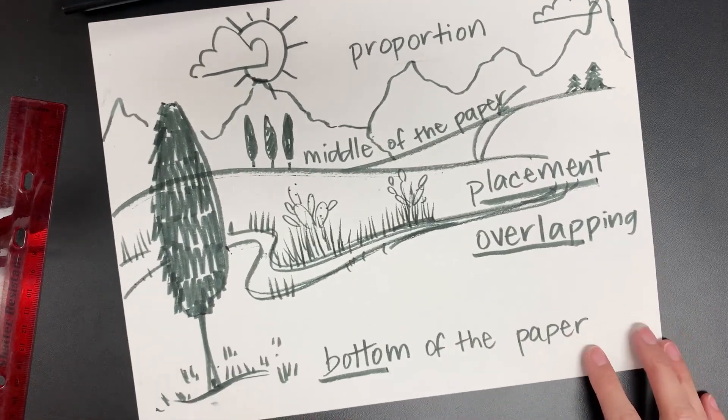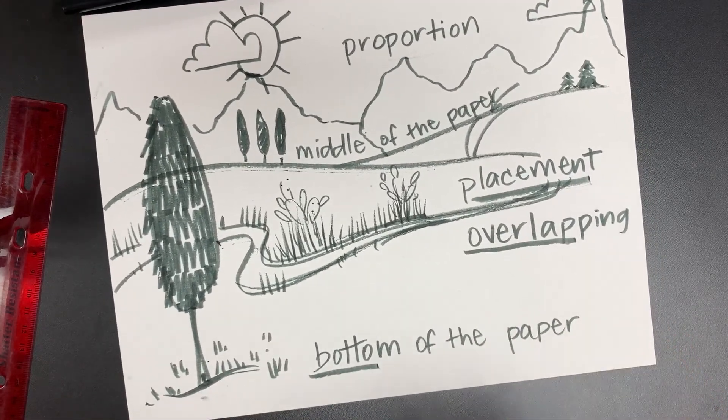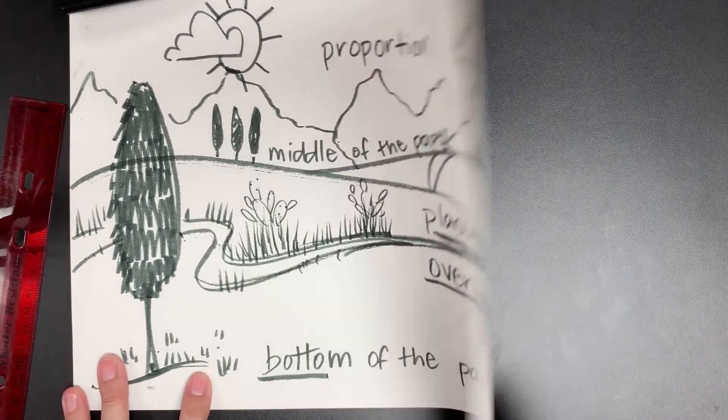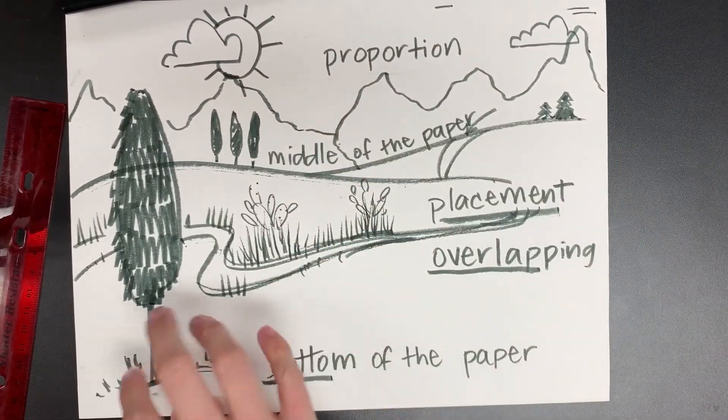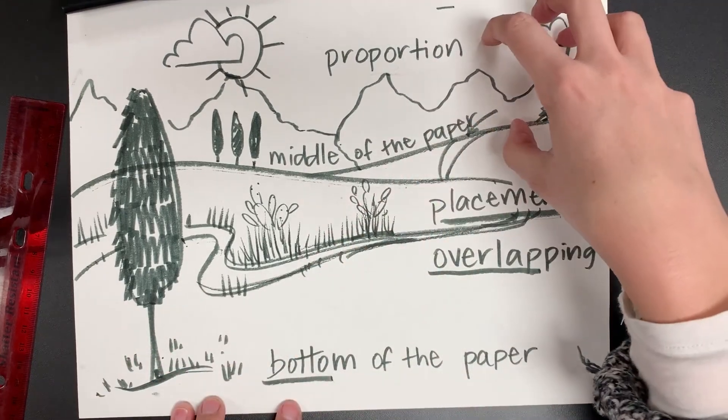And that's how we create a feeling that on this 2D piece of paper, we have depth. Depth is what's close to us and what's far away from us.